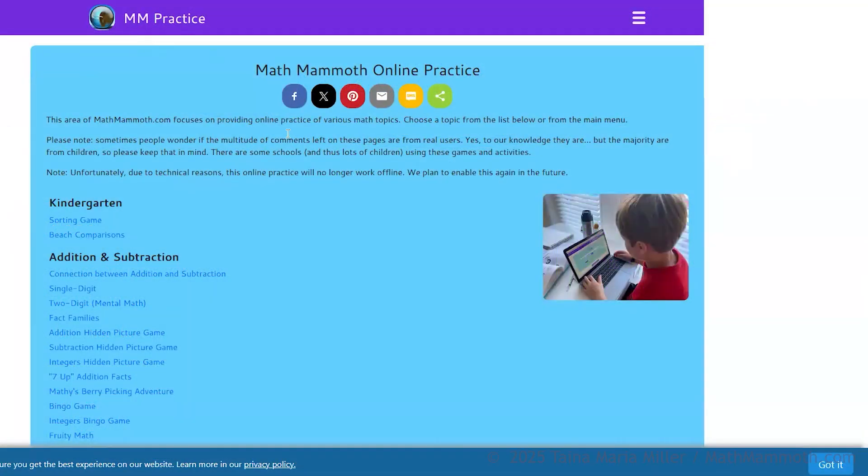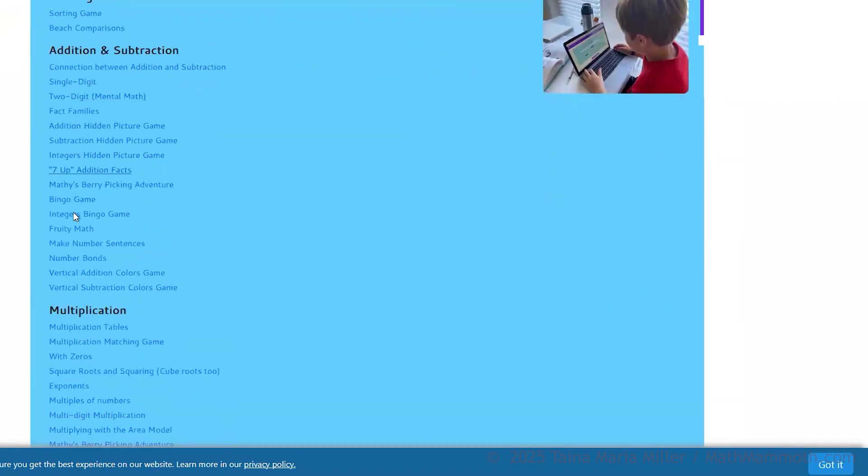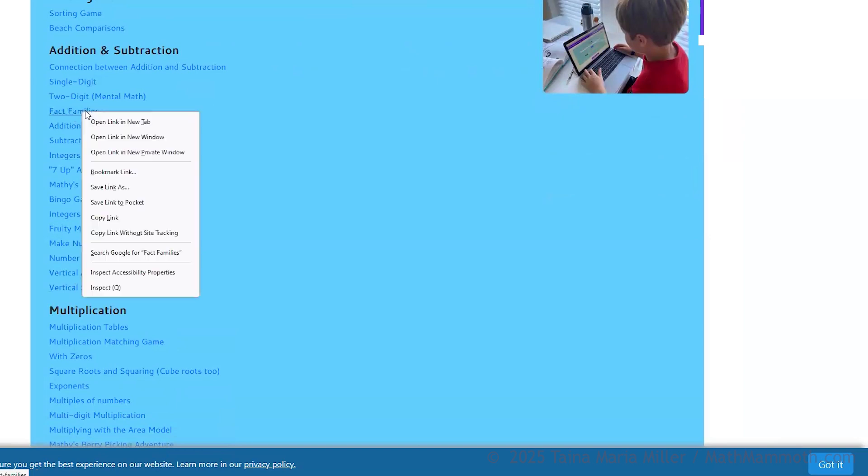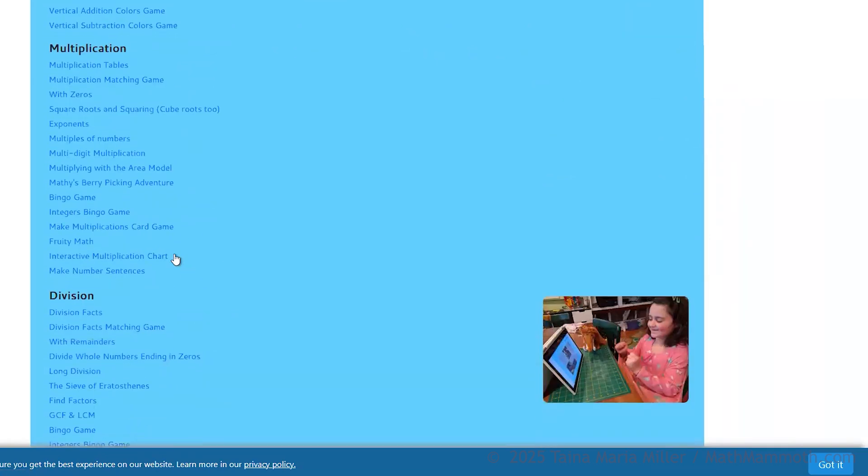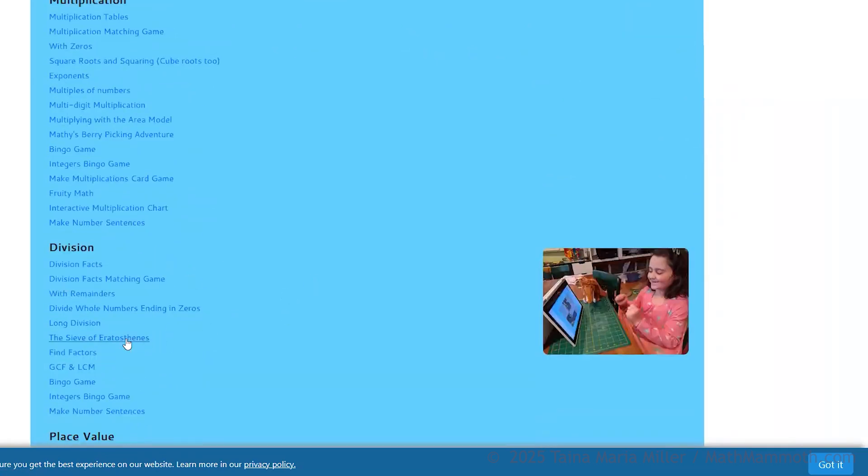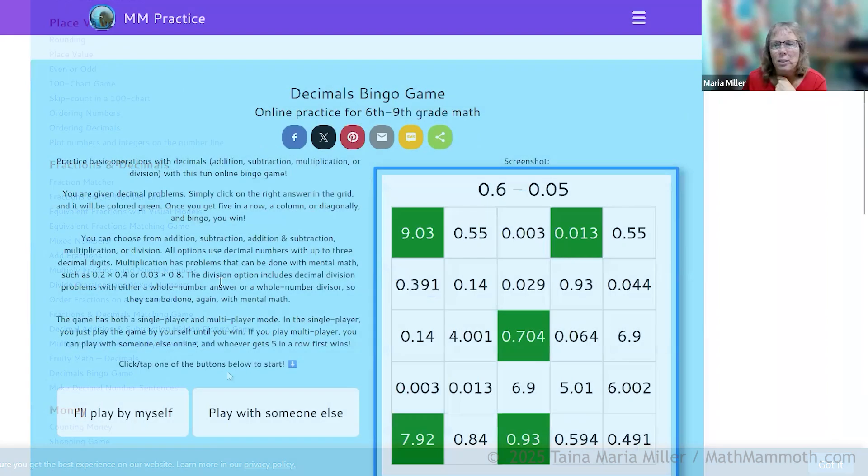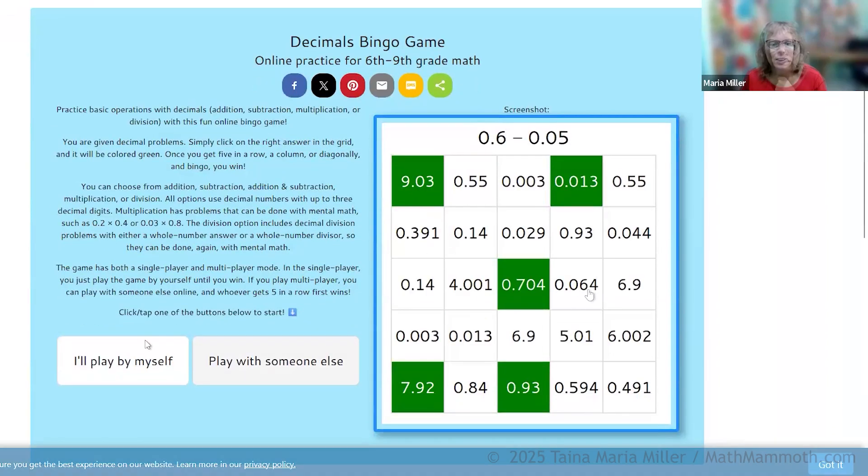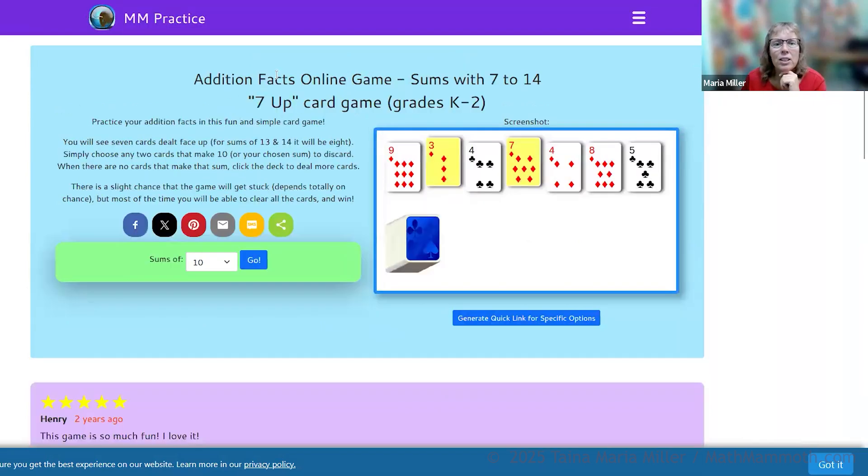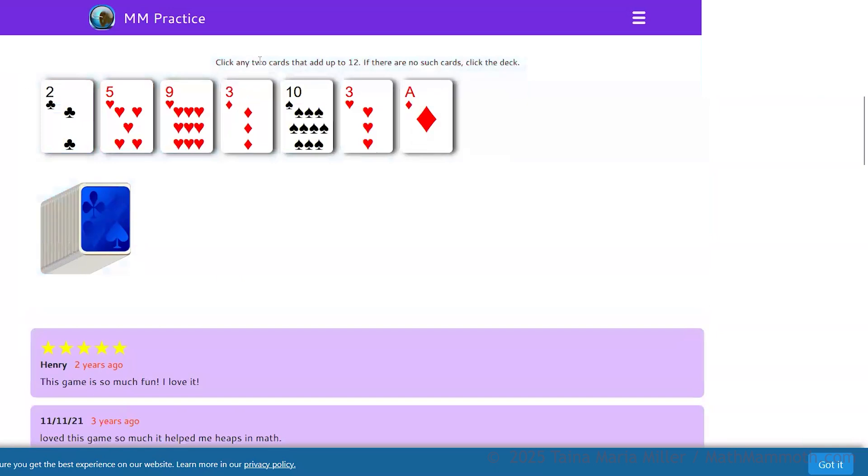This is Math Mammoth practice zone, so to speak. Some of these are games and some of them are just practice exercises that are not actually games. Place value fractions and decimals. Decimals bingo game. This one you can even play with somebody else. Most of them are only for one person. This is an addition fact card game. You can choose sums of eight to practice or sums of 12. That's how the curriculum teaches addition facts is by the sum of something. So you can use this to practice it. Click any two cards that add up to 12, they go away.